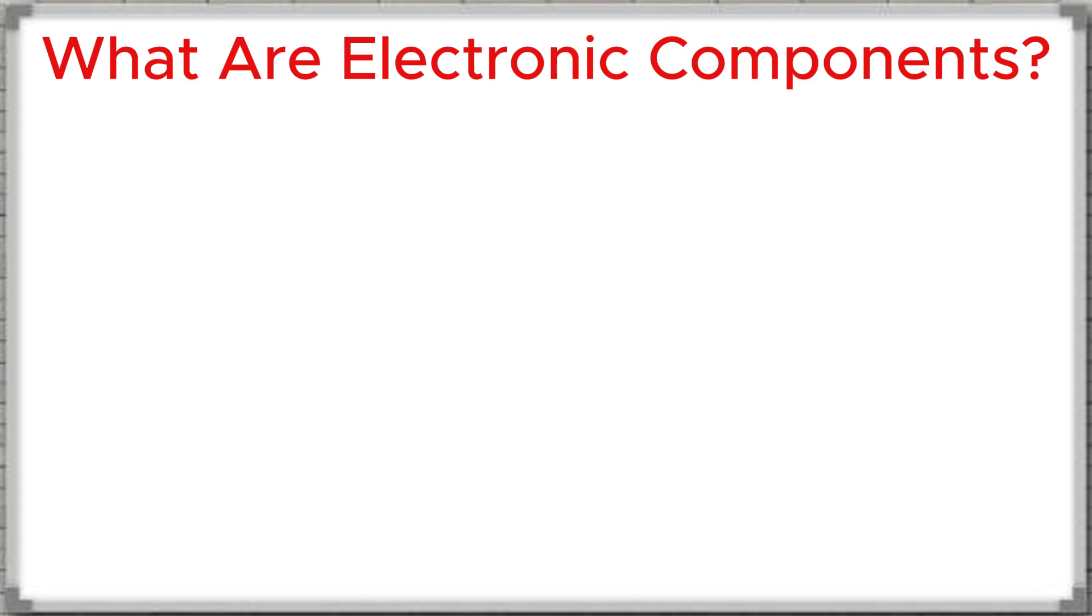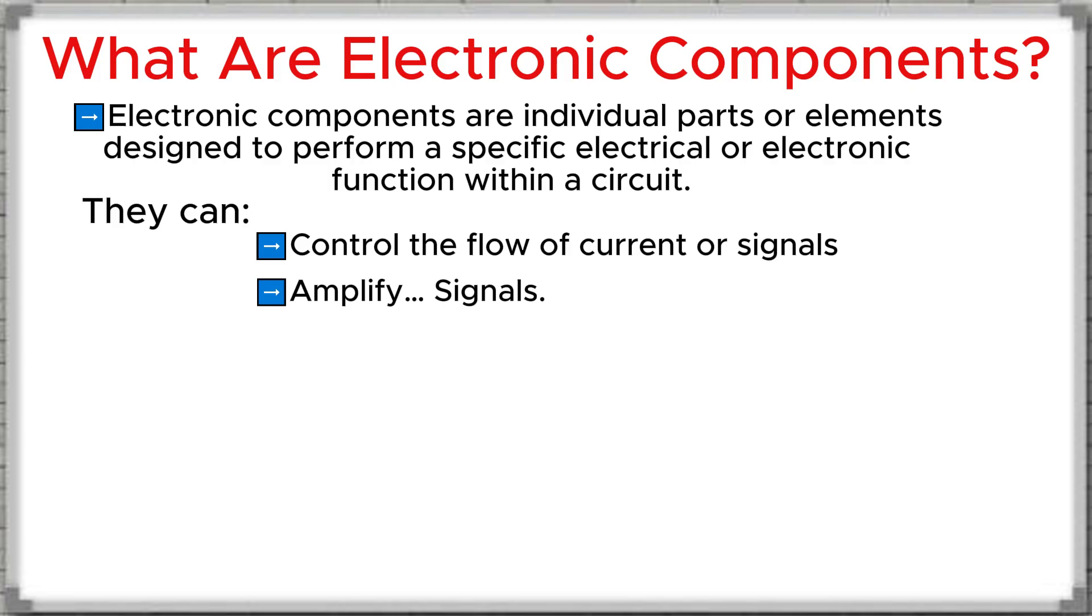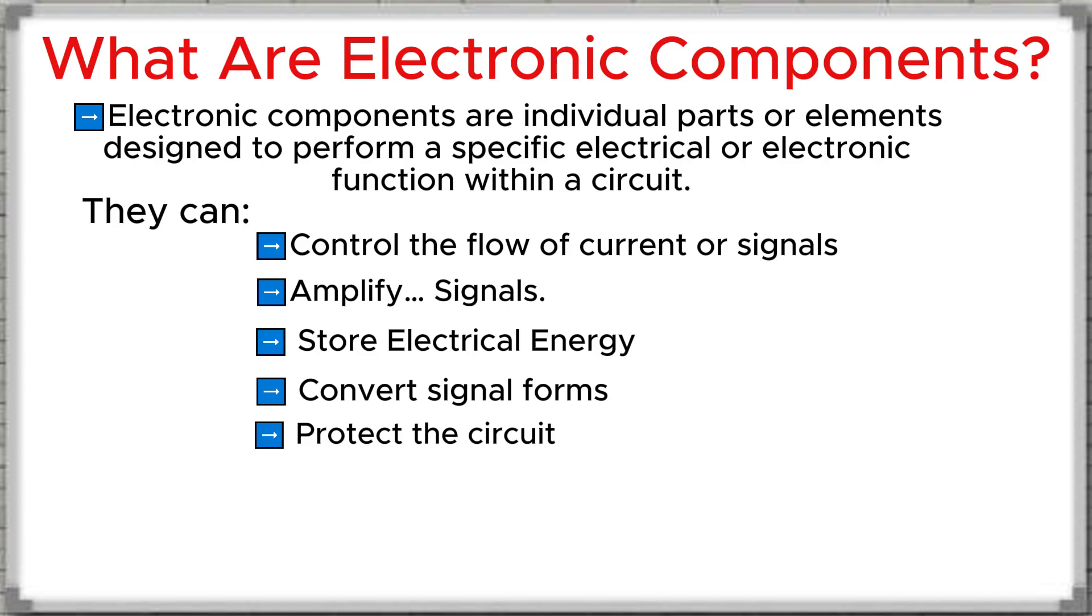What are electronic components? Electronic components are individual parts designed to perform a specific electrical or electronic function in a circuit. They can control the flow of current or signals, amplify signals, store electrical energy, convert signal forms, and protect the circuit.